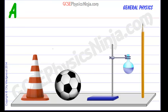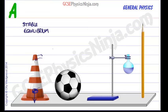A cone's centre of mass is quite low, about there, and so the weight acts downwards. If we were to tilt this slightly, the centre of mass would rise slightly, and if it rises then gravity wants to pull it down — so when you let go, the cone returns back to its upright position. This is an example of an object with stable equilibrium. Objects with stable equilibrium typically have a wide base and a low centre of mass.